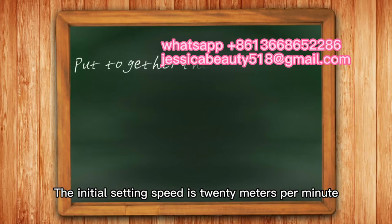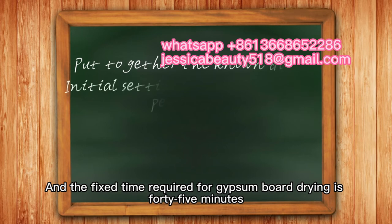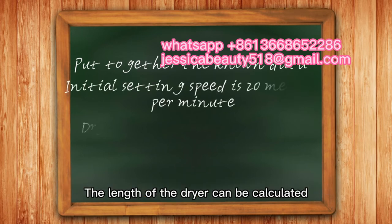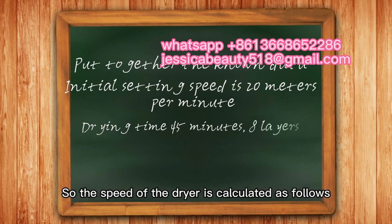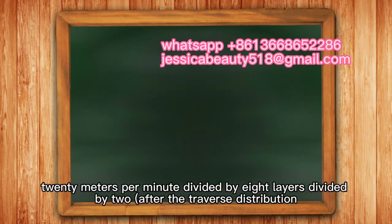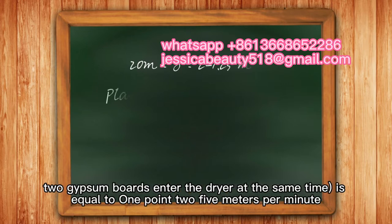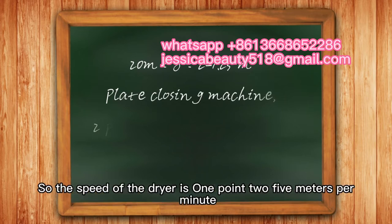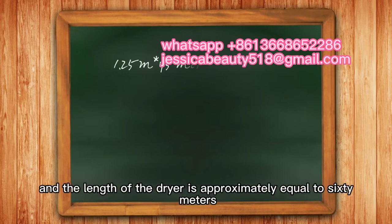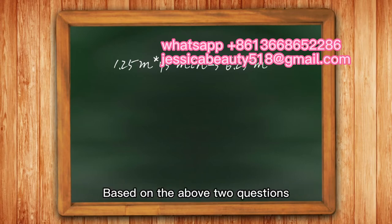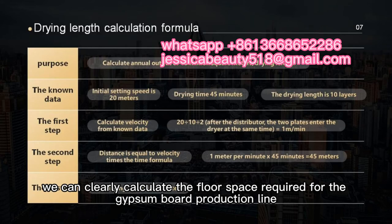The initial setting speed is 20 meters per minute, and the drying time required for gypsum board is 45 minutes. For 10 million square meters of annual output, the dryer typically uses 8 layers, so the dryer speed is calculated as: 20 meters per minute divided by 8 layers, divided by 2 (since two gypsum boards enter the dryer simultaneously after traverse distribution), which equals 1.25 meters per minute. With a drying time of 45 minutes, the dryer length is approximately 60 meters.